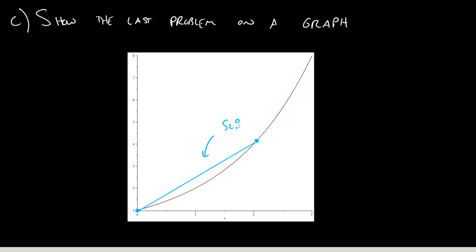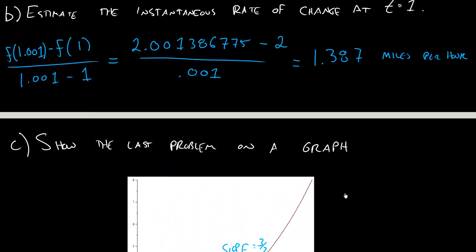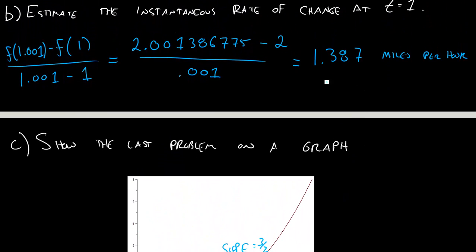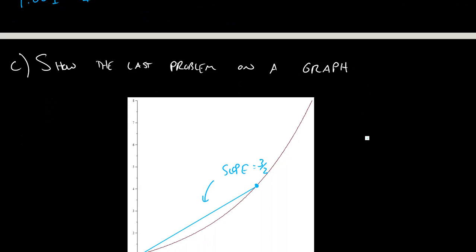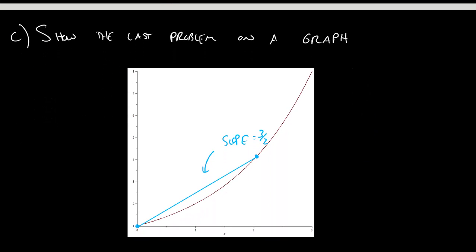But what about the other question, the instantaneous rate of change at 1? How do I interpret this 1.387 graphically? And so the way this actually works here is we just draw the same two points we drew before. We drew a point at 1 and we drew a point at 1.001, so another point really, really close to there. And we want to look at the slope between those two points, which is going to look something like this.